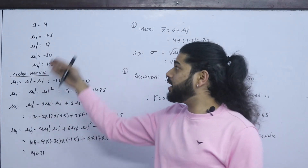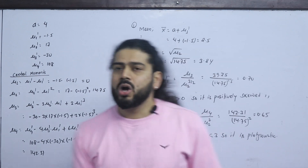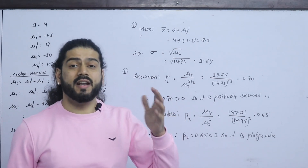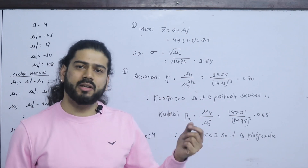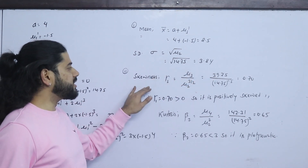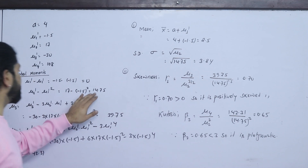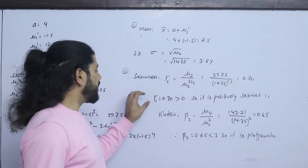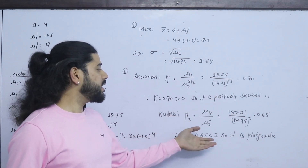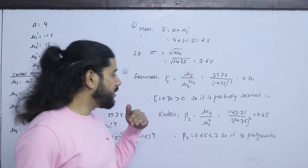The mean is A + μ1' = 4 + (−1.5) = 2.5. The standard deviation: second central moment is variance. μ2 = μ2' − (μ1')² = 14.75; standard deviation = √14.75 ≈ 3.85. Gamma 1 = μ3 / μ2^(3/2): μ3 = 39.75, μ2 = 14.75, so γ1 = 39.75 / (14.75^1.5) ≈ 0.70. Since γ1 = 0.70 > 0, it is positively skewed. Kurtosis β2 = μ4 / μ2² = 142.31 / 14.75² ≈ 0.65, less than 3 — platykurtic.